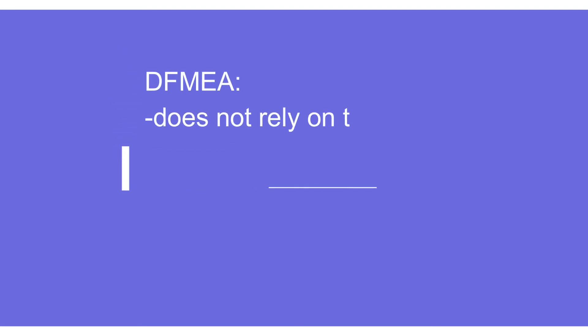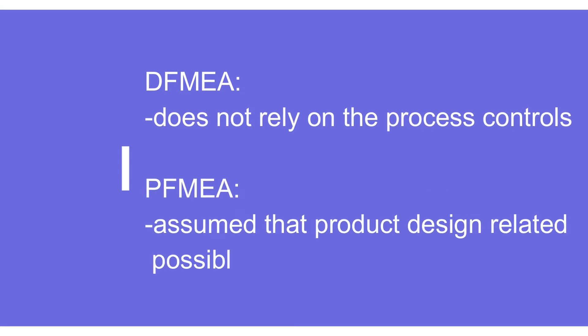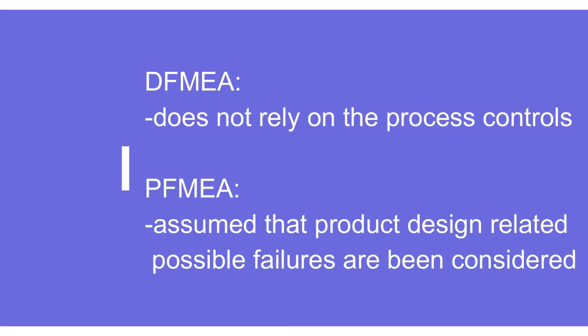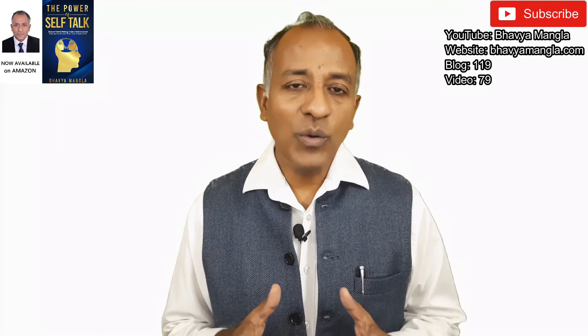The output of Process FMEA is the process control plan. Design FMEA does not rely on process controls to take care of product design — that is never considered. Similarly, Process FMEA always assumes that the product design is good and there will not be any issues with respect to that.